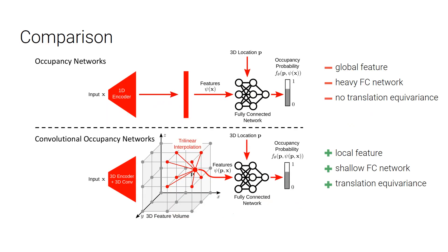Here is the direct comparison between the occupancy network on the top and our convolutional method on the bottom. We can see for our method, the features are not a global code anymore, but they are distributed in 3D space. They can benefit from the translational equivalence of either 2D or 3D convolutional networks. Moreover, since the features of our method have richer local information, we only require a shallow fully connected network.